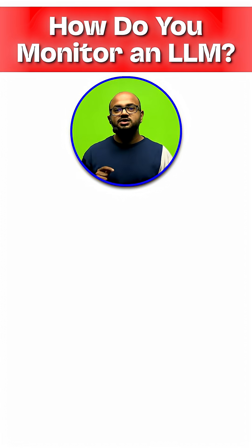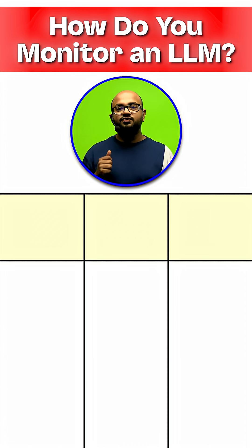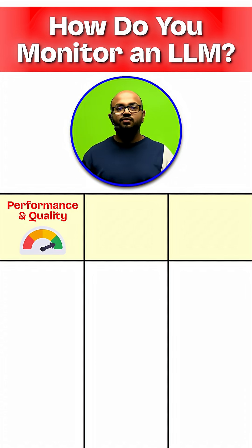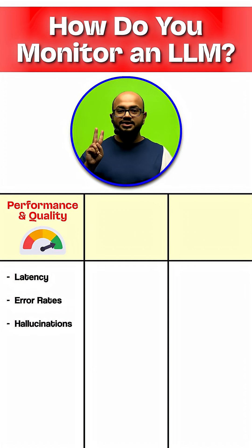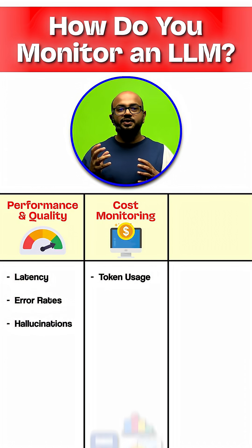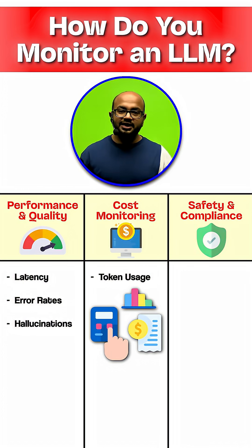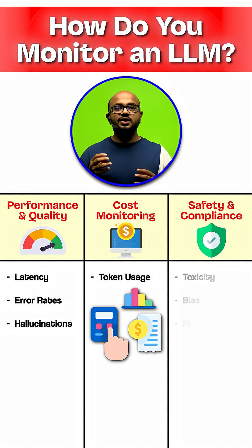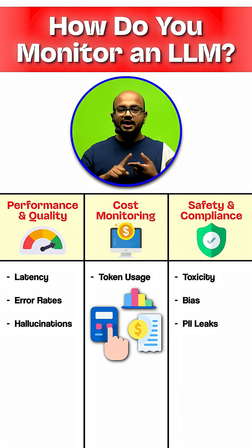Here's your expert answer. Start by breaking monitoring into three main pillars. First, performance and quality — where you track latency, error rates, and hallucinations. Second, cost monitoring: token usage to prevent budget overruns. Third, safety and compliance, where you scan for toxicity, bias, and PII leaks.